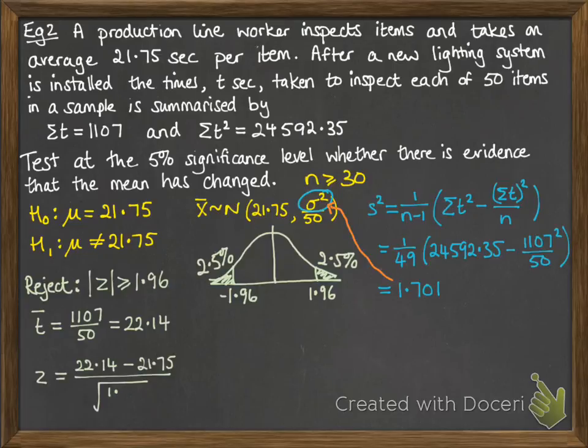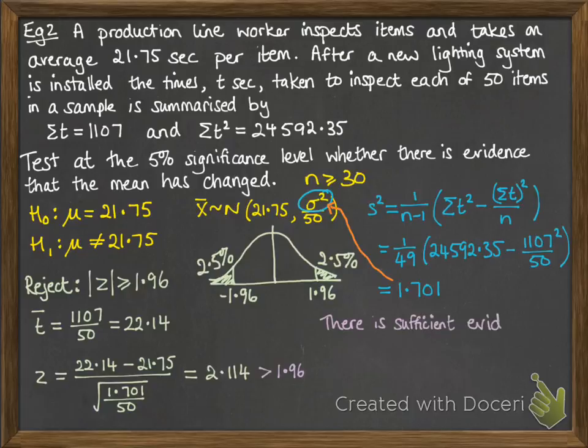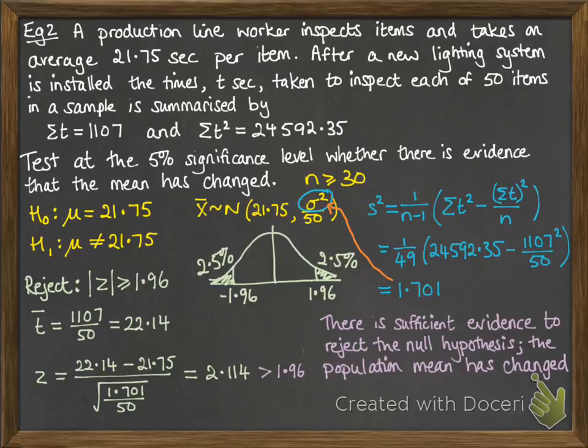Now our z value is that: 22.14 minus the mean from the distribution, 21.75, and then all over the square root of the variance. So we've put our 1.701 in there that we worked out as an unbiased estimate for the variance. That gives us a value of 2.114. Now that is bigger than the 1.96, so that means it's in the rejection region, and there is sufficient evidence to reject the null hypothesis, meaning that the population mean has changed.